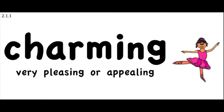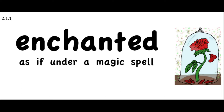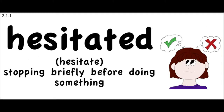Before we start our story today, I want to go over some words you might hear that you might not know the meaning of. Charming — if something is charming, it is very pleasing or appealing. For example, the family stayed in a charming little cottage at the beach. Enchanted — if something is enchanted, that means it was put under a magic spell. For example, Ruby knew she was in an enchanted forest because there were jewels growing on the trees. Hesitated — if you hesitated, that means you stopped briefly before you did something. For example, the dog hesitated before going outside in the rain.